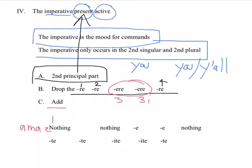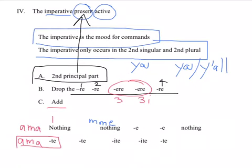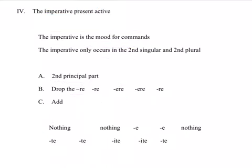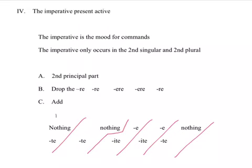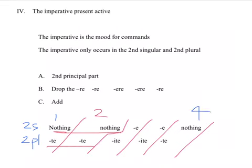For the first conjugation, amare would become ama. In the plural, you drop the -re and it becomes amata. For the second conjugation, you add nothing, so monere would just be mone. In the plural, it would be monete. To clarify the chart: for the first conjugation, you add nothing for the second person singular and -te for the second person plural. For the second conjugation, you add nothing for the second person singular and -te for the second person plural. Note also that in the fourth conjugation, you add nothing for the second person singular and -te for the second person plural.